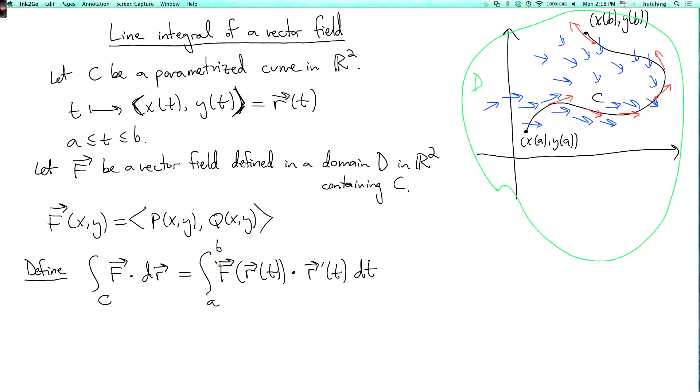You could also write this in terms of integrals with respect to x or y. Why is that? Well, if we expand this out, then this is the integral from a to b of <P(r(t)), Q(r(t))> dot <x'(t), y'(t)>. By the definition of the dot product, sorry, I forgot the dt. I shouldn't forget that.